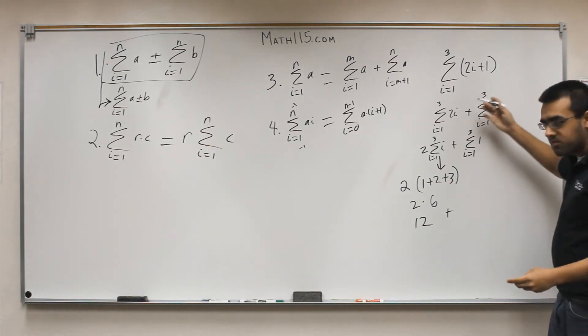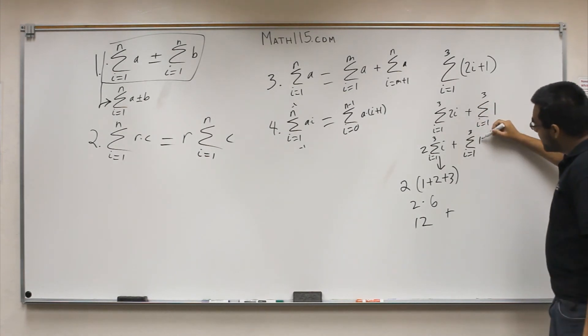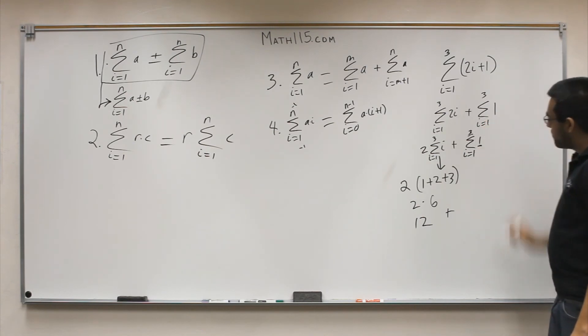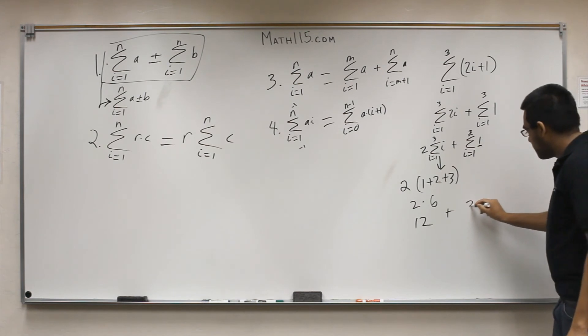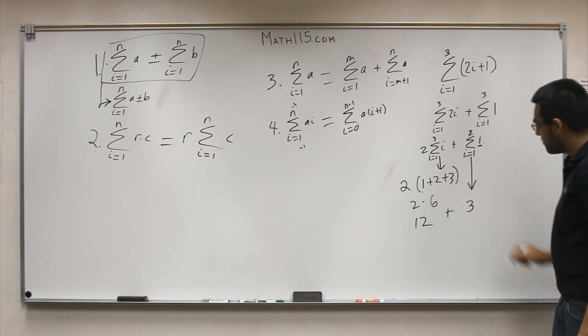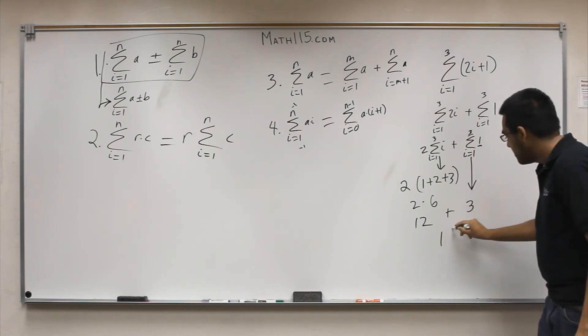as long as your index goes from 1 to 3, as long as that's true, 1 to some number, then all you do is take the constant you have here and multiply it by the number up top. So 1 times 3 equals 3. That's where that came from. Your final answer in this case is 15.